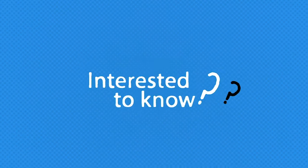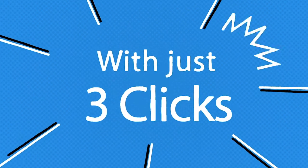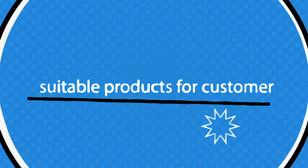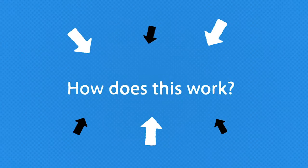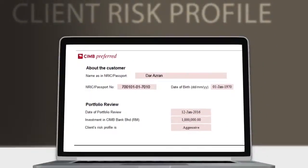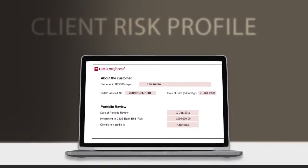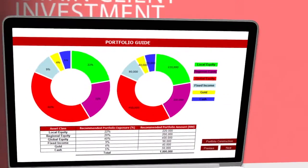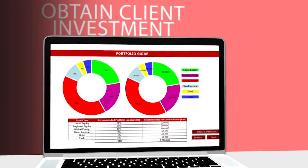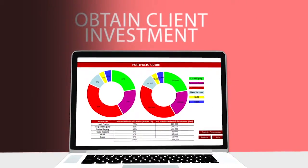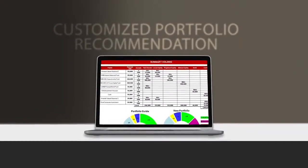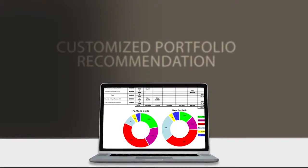Interested to know? With just three clicks, you can now determine which products are suitable for your customers. So, how does this work? The first step is to assess your client's risk profile. And then the second is to obtain your client's existing investment holdings. After clicking submit, a model portfolio recommendation would pop up and you can use this for your client.